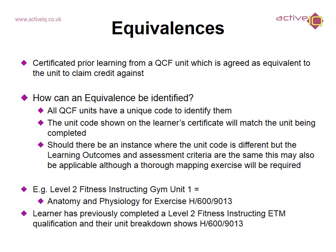For example, the learner is completing the level 2 fitness instructing gym qualification. Unit 1 is the anatomy and physiology for exercise, and here is the unit code shown. The learner has previously completed a level 2 fitness instructing exercise to music qualification, and their unit breakdown also shows the same unit with the same code. So this means there is an equivalence and it can be accepted.